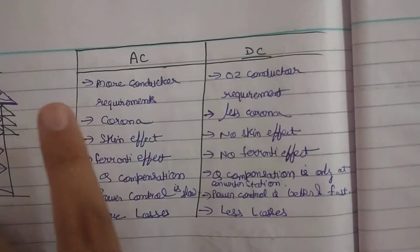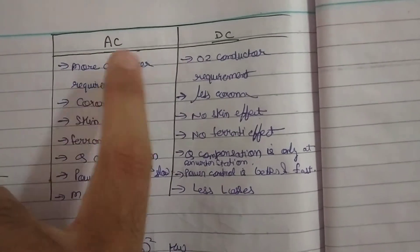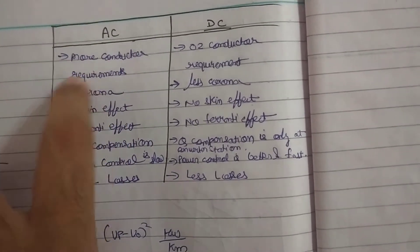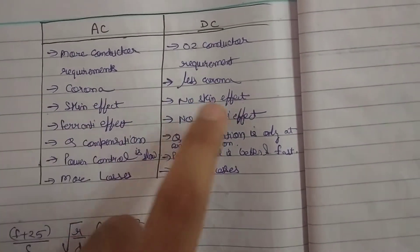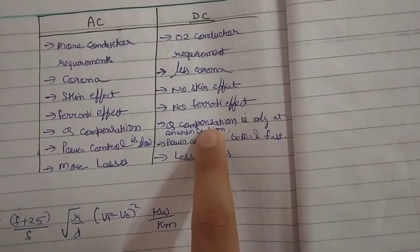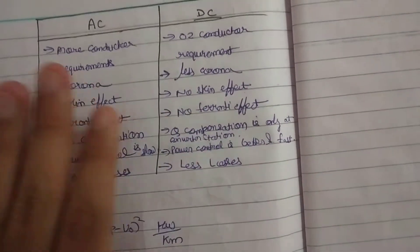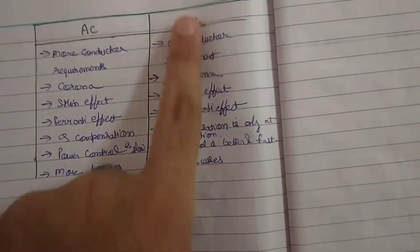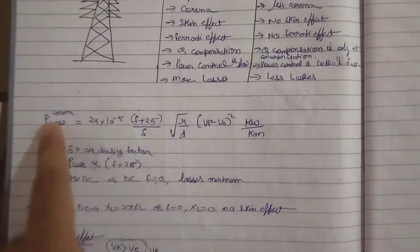Basically, the difference between AC and DC: AC requires more than three conductors in a double-circuit line, while DC requires only two conductors. Corona loss is present in AC but less in DC. Skin effect is present in AC but absent in DC. Ferranti effect is present in AC but absent in DC. Reactive power (Q) compensation is required along AC lines but in DC it is only at the converter station. Power control is slow in AC but better and faster in DC. More losses are in AC but less losses in DC.